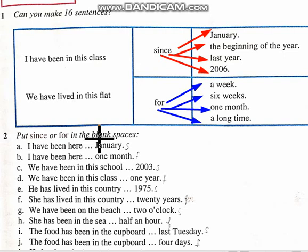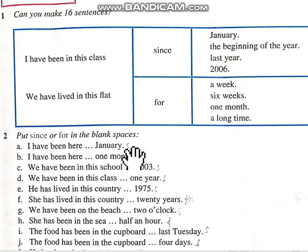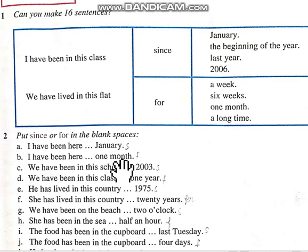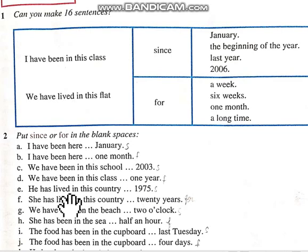I have been here since January. I have been here for one month. We have been in this school since 2003. We have been in this class for one year. He has lived in this country since 1975.